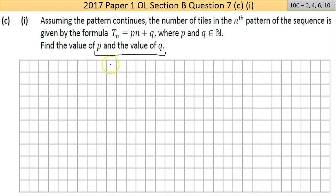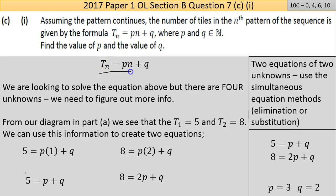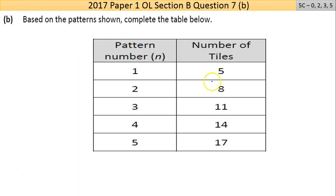I've written out the statement from the question: the total number of tiles is given by P times the number of tiles plus Q. Currently there are four unknowns, so we need to figure out more information. If we take any piece of information from the previous question - for example, T_1 equals 5 - that means n is 1 and the total number of tiles is 5. So I have two pieces of information right there.